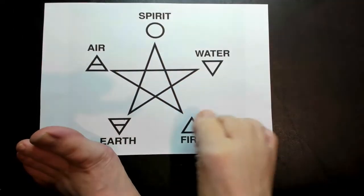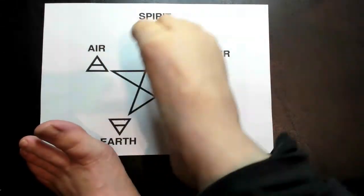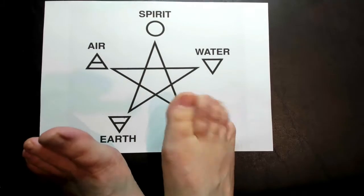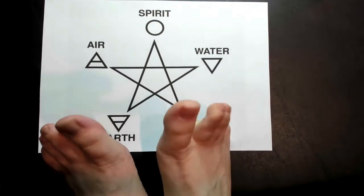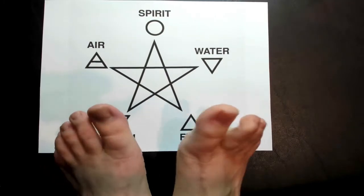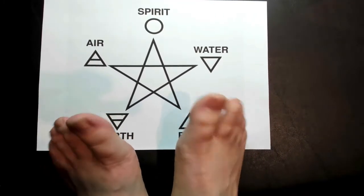Air is Gemini, Libra, and Aquarius. Air signs are all about action, ideas, and motion.